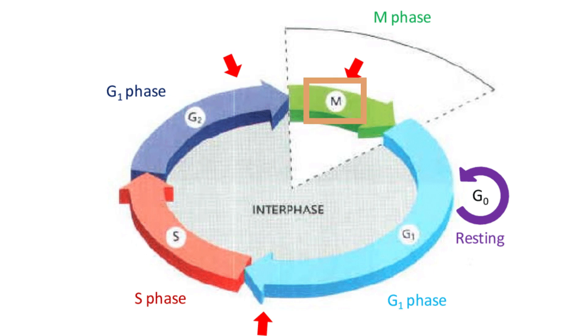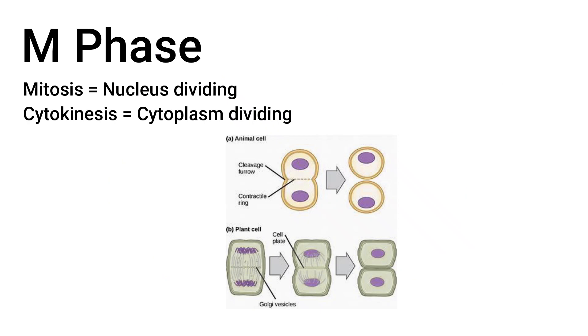The last phase is called mitosis, where the cell will divide. In mitosis, the nucleus of the cell will split into two, and the cytoplasm of the cell will split, creating two daughter cells that will come into the cell cycle again.